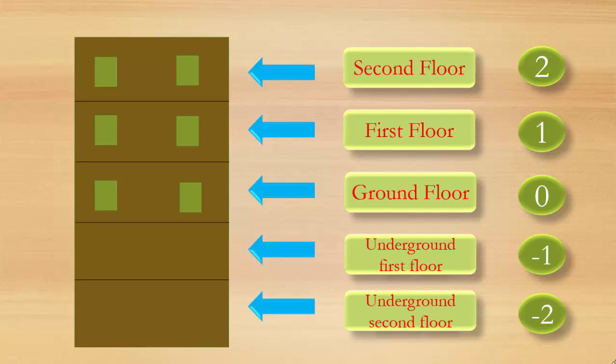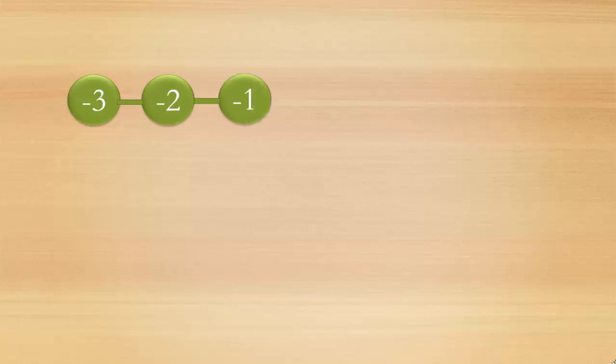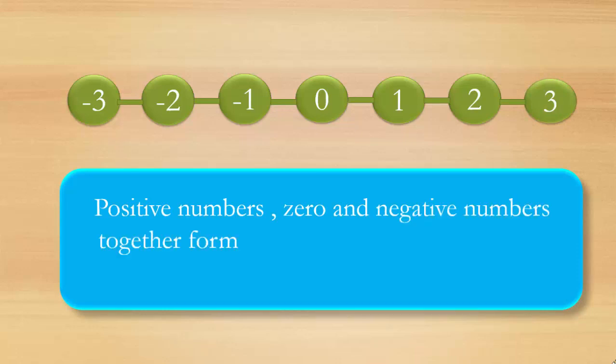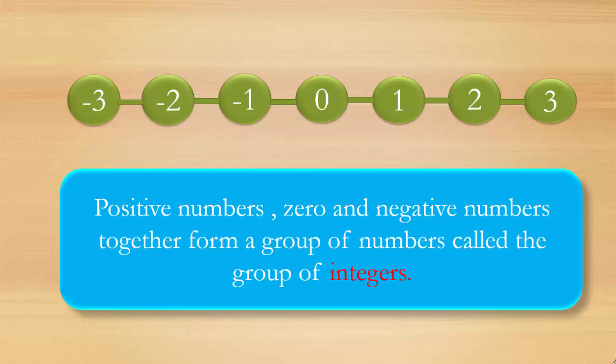So we have zero, we have positive numbers like one and two, and we also have negative numbers. So: minus three, minus two, minus one, then zero, then one, two, and three. Positive numbers, zero, and negative numbers together form a group of numbers called integers. All these numbers together are called integers.